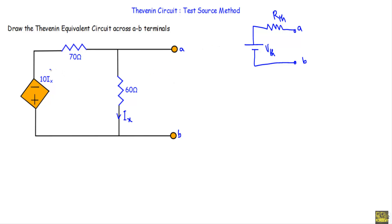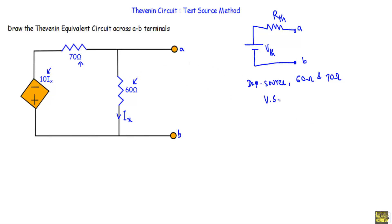Now look at the circuit. We have this dependent source of 10·Ix, this resistor of 70 ohms, and this resistor of 60 ohms. This circuit does not contain any independent voltage source or current source.